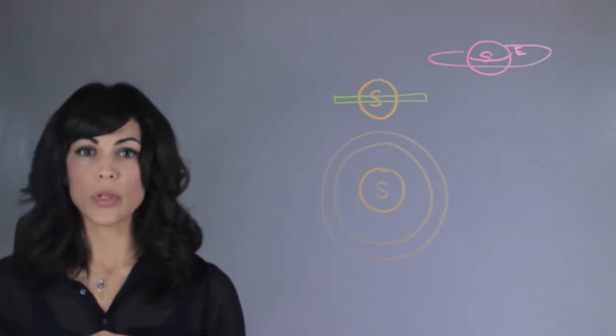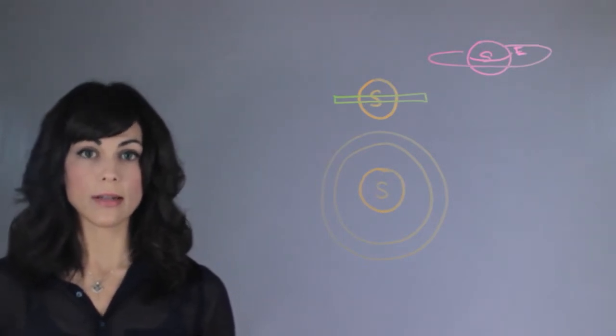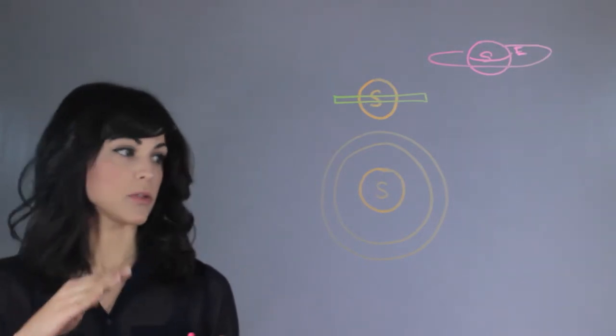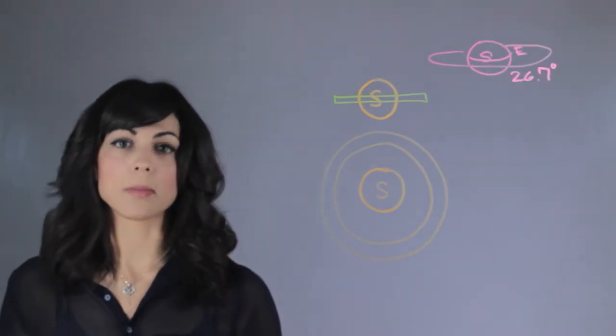Now, compared to the orbital plane of Saturn, they are tilted because Saturn is tilted by 26.7 degrees from the orbital plane.